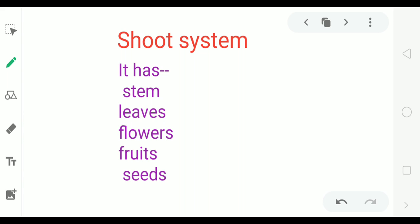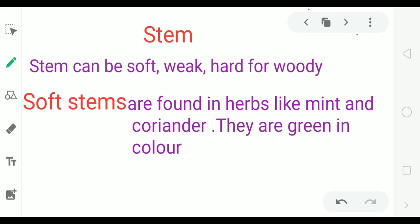Shoot system has stem, leaves, flowers, fruits and seeds. Now stems are of three types. First, soft stems. Soft stems are found in herbs like mint and coriander. They are green in color. Herbs are very small plants with soft, green stems.